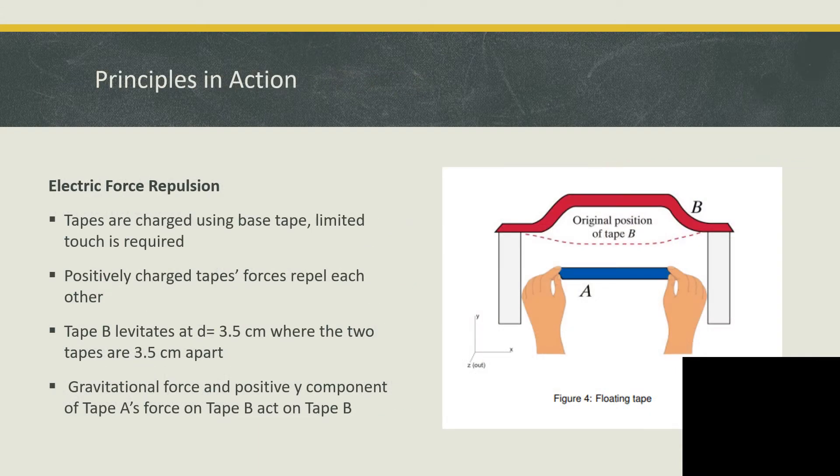The main experiment included loosely hanging tape B between two boxes and holding tape A close to it. Tape B began to levitate away from tape A when the two pieces of tape were 3.5 centimeters away from each other and remained hovering until tape A was removed. Tape B began to levitate because of our assumption that it had the same electric charge as tape A, and because the gravitational force of tape B was the same magnitude but opposite direction of the electric force of tape A on tape B. Thus both forces cancelled, leaving only the electric forces of tape A on B and tape B on A to repel each other.